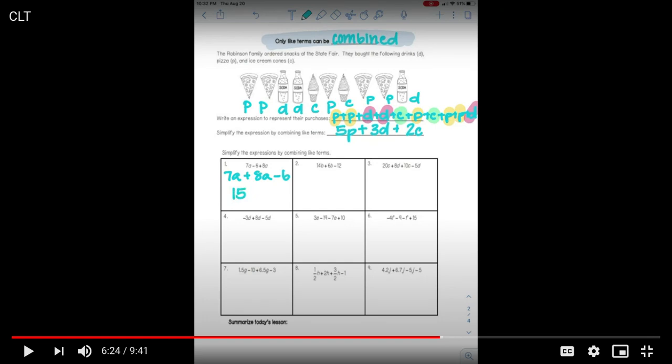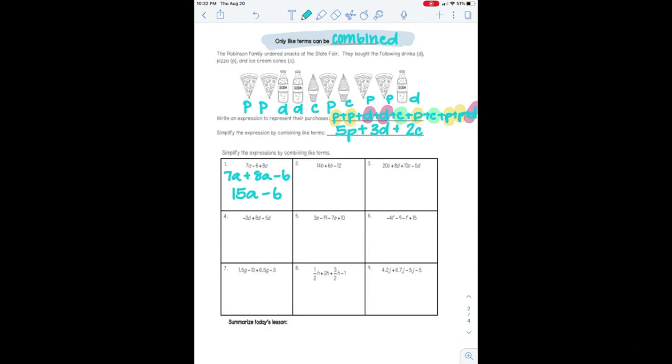So my 7A plus my 8A and I just moved that minus 6 to the end over there. And that is going to give me 15A minus 6. Looking at number 3 over here, I'm going to do the same thing. So I've got 20C plus 10C. That's going to give me 30C.